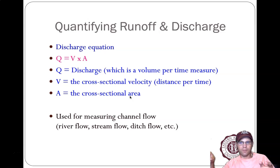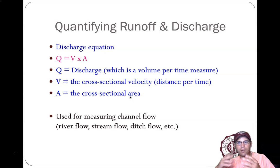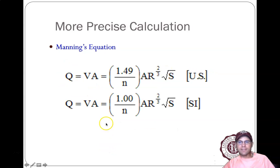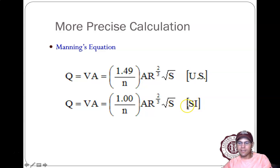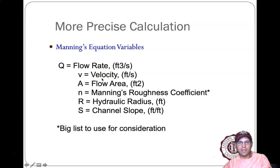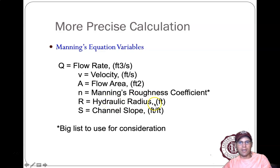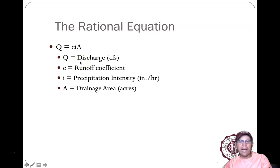Discharge is calculated as cross-sectional velocity times cross-sectional area — the height and depth give you area, and how fast it's moving gives you the time component, so it's a volume per unit time. Manning's equation is one way to calculate it, used in hydrology, civil engineering, and environmental geology. It requires knowing the water velocity, flow area, surface roughness, hydraulic radius, and channel slope.